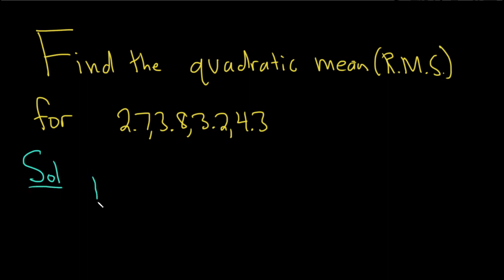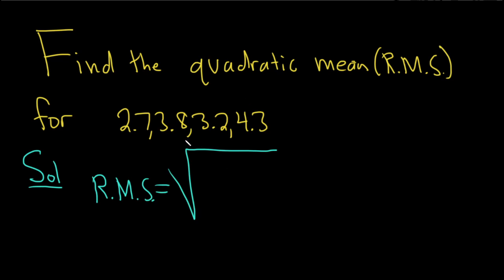So the RMS, or root mean square, is given by the following formula. We have a square root, and in the numerator, you just square each of the numbers and add them up — we can write that as the sum of the squares of our data. Then we divide by the total number of data points, which we're going to call capital N.